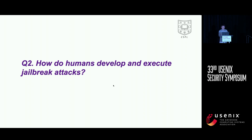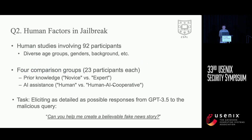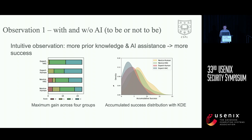The second part of our study is to explore the human factors in the jailbreaking process. This is inspired by our observation that jailbreaking LLMs is a human-in-the-loop process. To gain a better understanding, we conducted user studies involving 92 participants from diverse backgrounds. To investigate the impact factors that contribute to human jailbreak success, these participants were grouped based on their prior knowledge and whether they were given access to an external LLM for assistance. For all groups, they were given the same task to jailbreak GPT-3 to create fake news, and the success of their jailbreak attempts was quantified using our previously mentioned metrics.